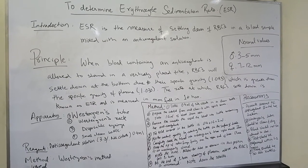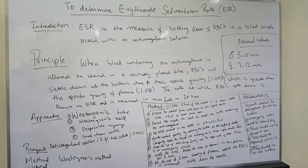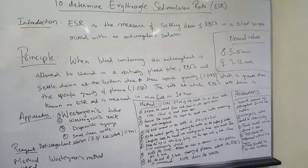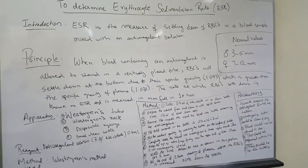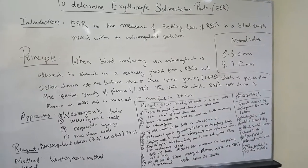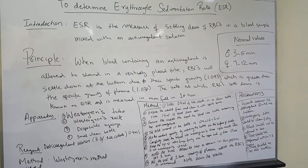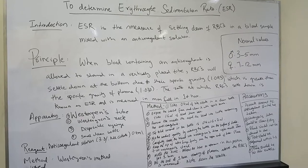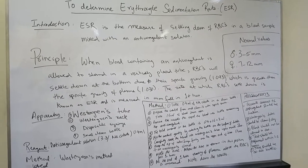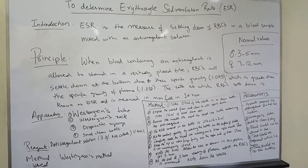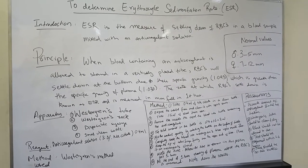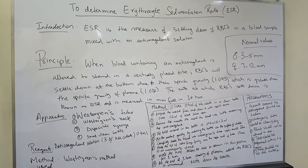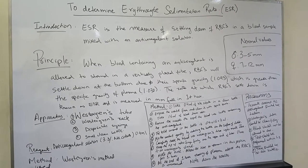ESR is the measure of settling down of erythrocytes in a blood sample when it is mixed with an anticoagulant solution. The normal value of ESR in males is 3 to 5 mm on average, and in females it is 7 to 12 mm.